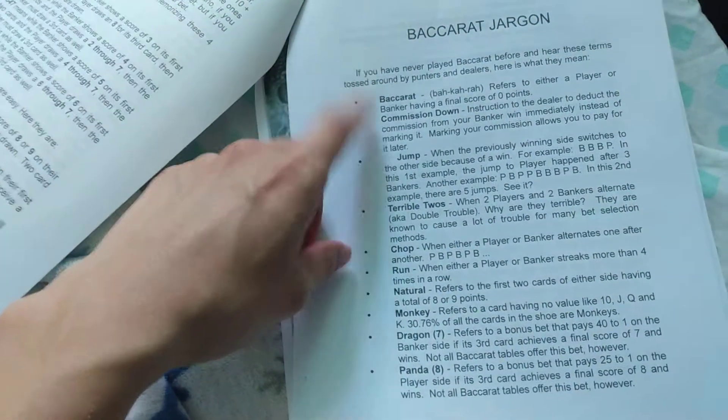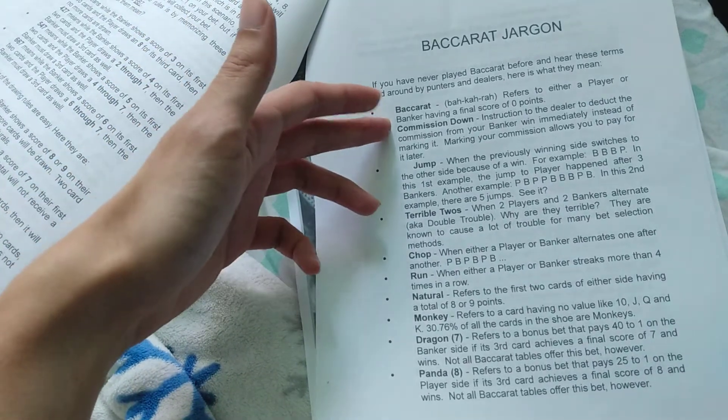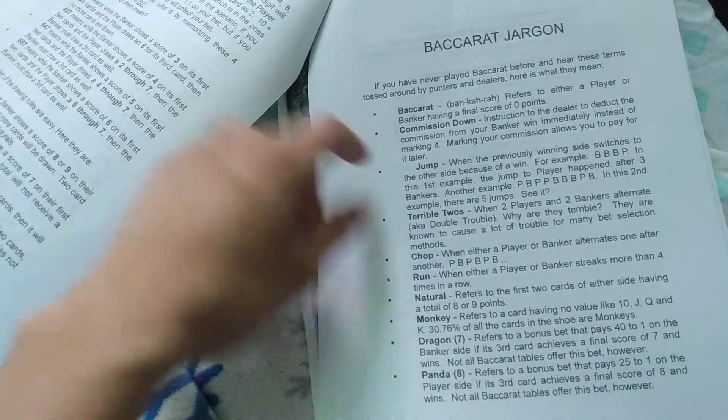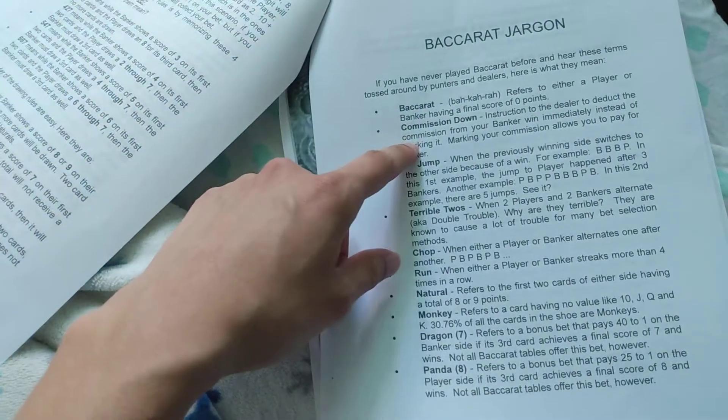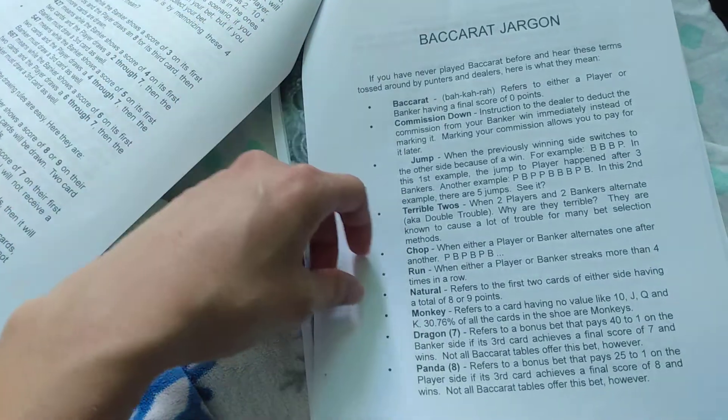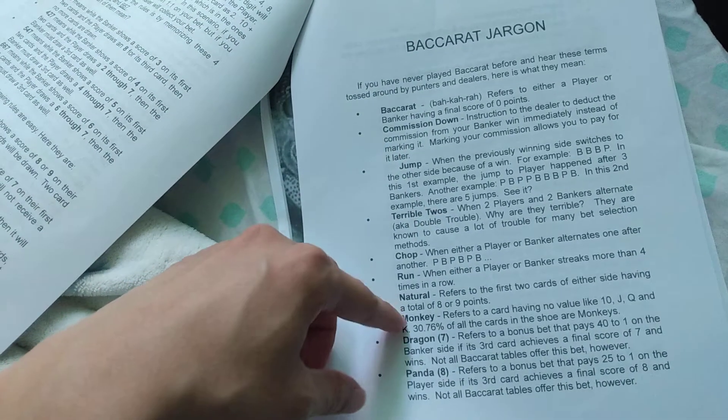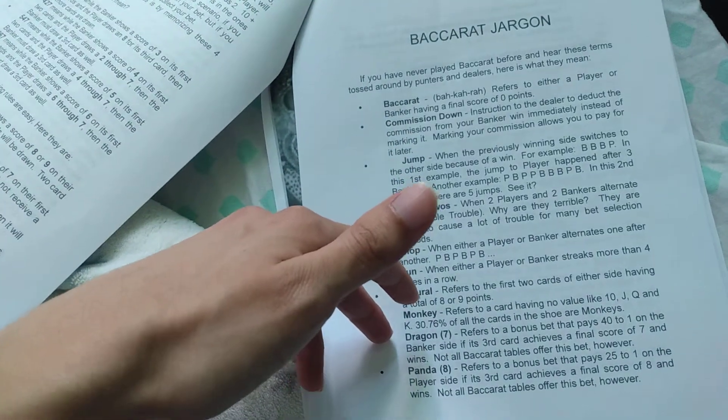The Baccarat Drawing is list of what kind of games it could be. And you can, like, Baccarat by itself. So, it's the lowest, nine's the highest. Mission down. Terrible switch. Natural monkey. When he says like monkey, dragon, panda, those are based on the side bets.